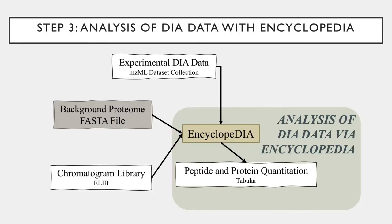The last step of the workflow is the Encyclopedia step and the analysis of the experimental DIA data. This step uses the chromatogram library, the background FASTA file, and the .mzml experimental dataset as inputs.